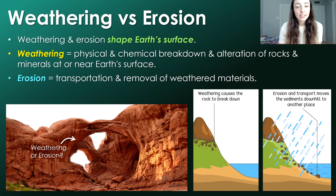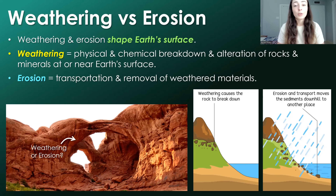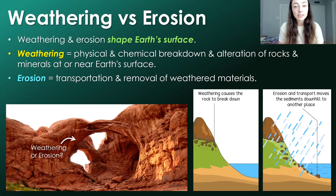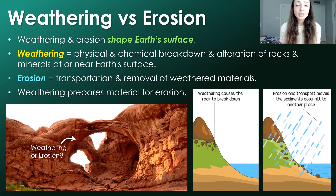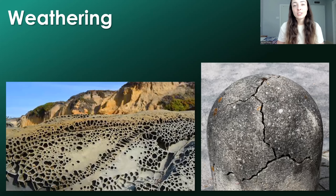Weathering is the physical and chemical breakdown and alteration of rocks and minerals at or near Earth's surface. We have to specify "at or near Earth's surface" because when we're talking about alteration of rocks and minerals at depth within Earth's crust or mantle, that either becomes igneous or metamorphic processes. Whereas erosion is the transportation and removal of that weathered material. So basically, weathering prepares material for erosion.